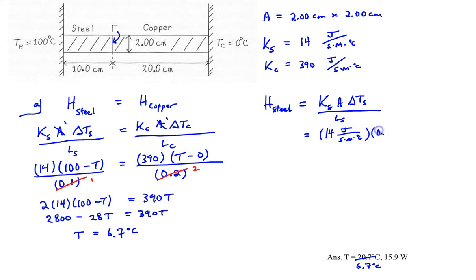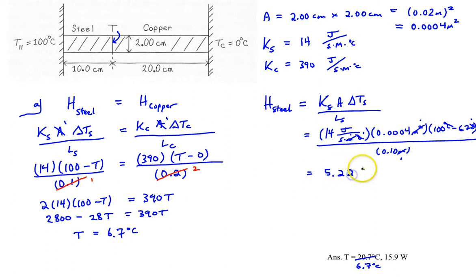So area is, well, it's 2 centimeters times 2 centimeters, which I really should be putting in as meters. So it's 0.02 meters squared, which is really 0.0004 meters squared. So let's put that in here. Then the change in temperature will be 100 degrees Celsius minus a temperature of 6.7 degrees Celsius. And then all of that divided by the length of the bar, which is 0.1 meters. And hopefully you'll see some units cancel out here. The meters here and the meters here cancel out with meters squared there. And then the degrees Celsius here cancel out with degrees Celsius here and here. And then we should get an answer that's in joules per second, which comes out to an answer of 5.22 joules per second for this, or you could say 5.22 watts.